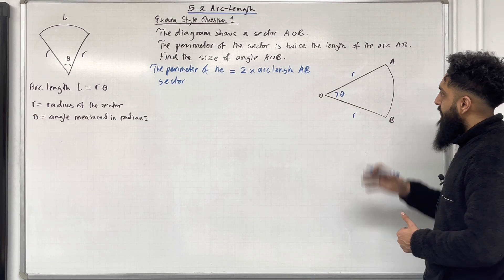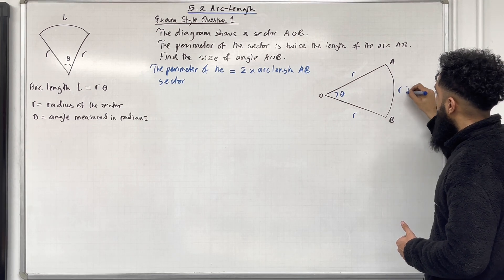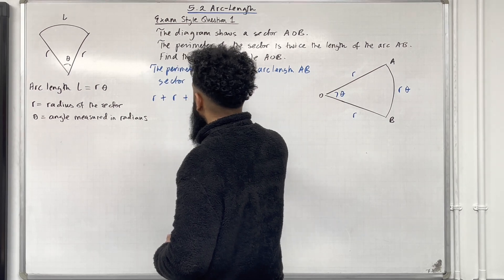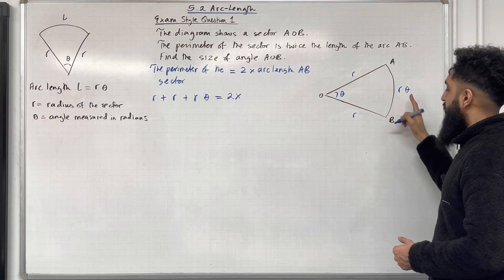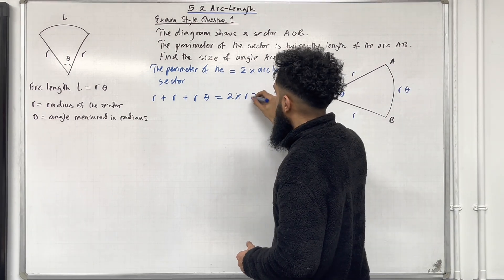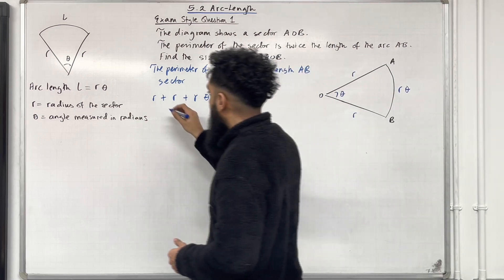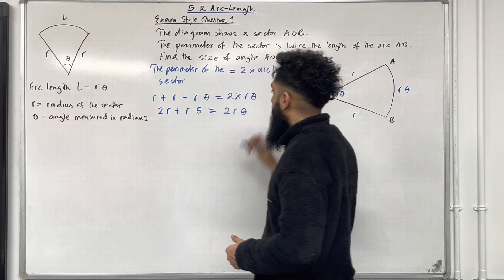The perimeter of this sector is R plus R plus this arc length which is R theta. So we've got R plus R plus R theta equals 2 lots of the arc length AB. So 2 lots of R theta. We can simplify this equation. So if we simplify it we get 2R plus R theta equals 2R theta.